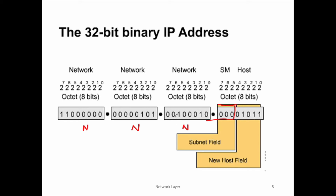We cannot change the bits in the network part because those are assigned by the American Registry for Internet Names and Numbers. For subnetting, we borrow some bits from the host portion — these bits are now called the subnet field. We are then left with, for example, five bits that we can use for assigning IP addresses to machines inside a subnet. The basic principle of subnetting is to borrow bits from the host portion to create smaller networks within a larger network.